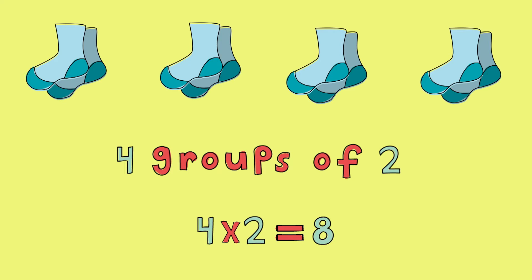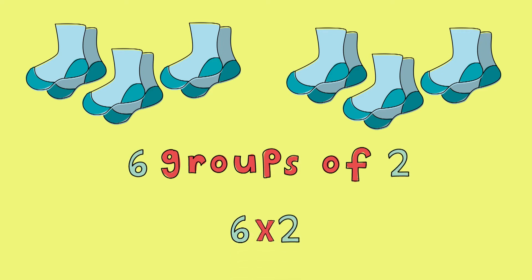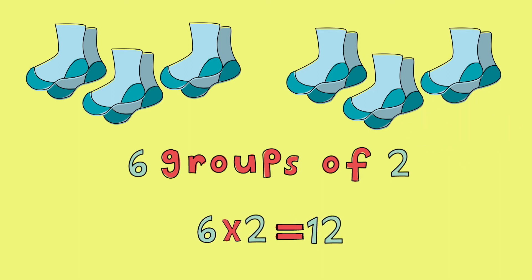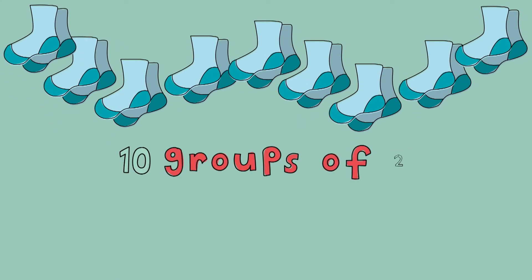How about six pairs of socks? You got it — six groups of two, or six times two. So how many all together? Count with me: two, four, six, eight, ten, twelve. And what about ten pairs of socks? Ten groups of two, or ten times two. Try this one on your own. Great job — ten times two does equal twenty.